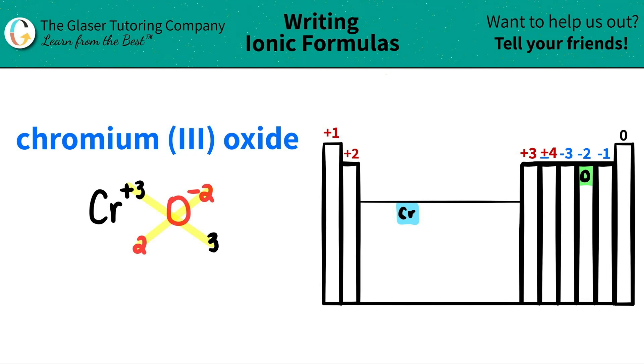When you do your crisscrossing, don't worry about the positives and the negatives. We're just using these as your subscript numbers and how many of each I need. So in that case, I have Cr. I have 2 of them, right? 2 chromiums. And then I have an oxygen, and I have 3 of those. So that's it. Chromium (III) oxide is just Cr2O3.